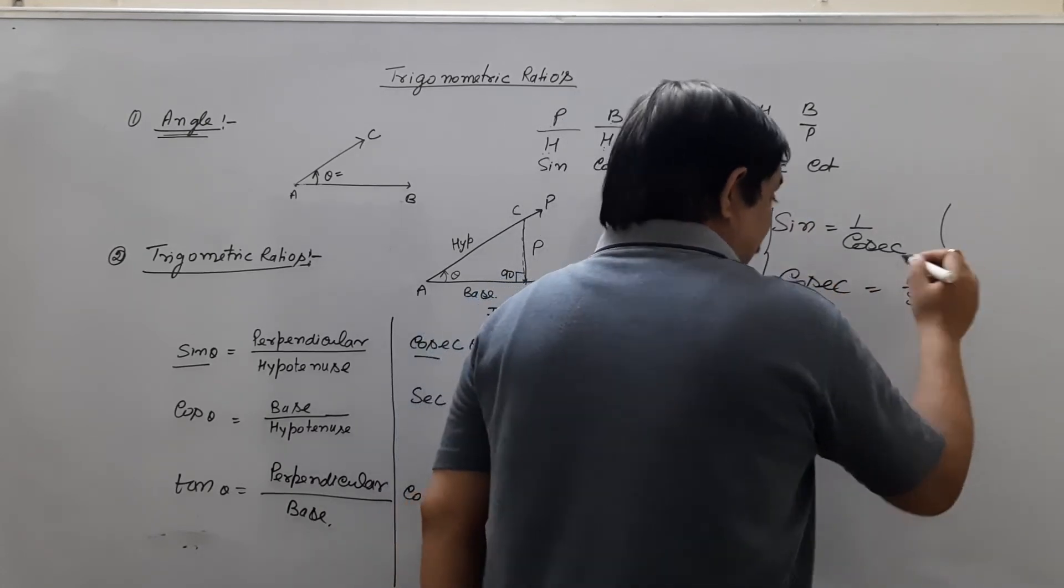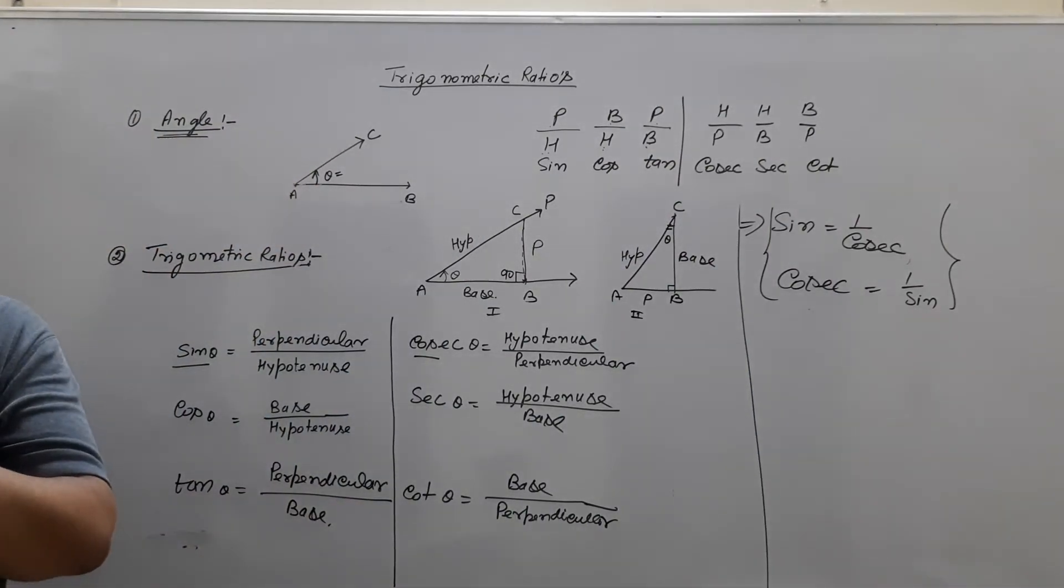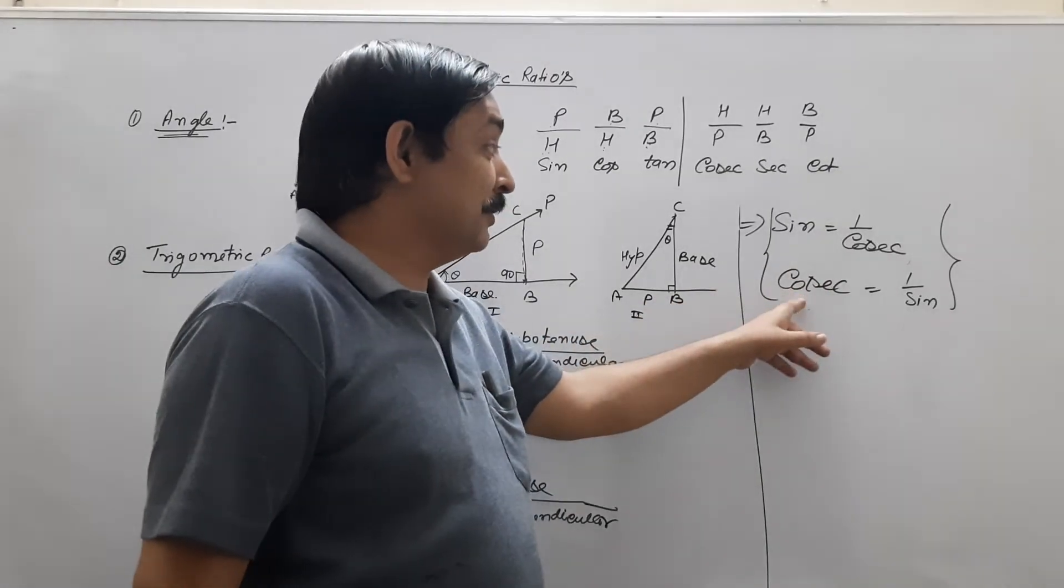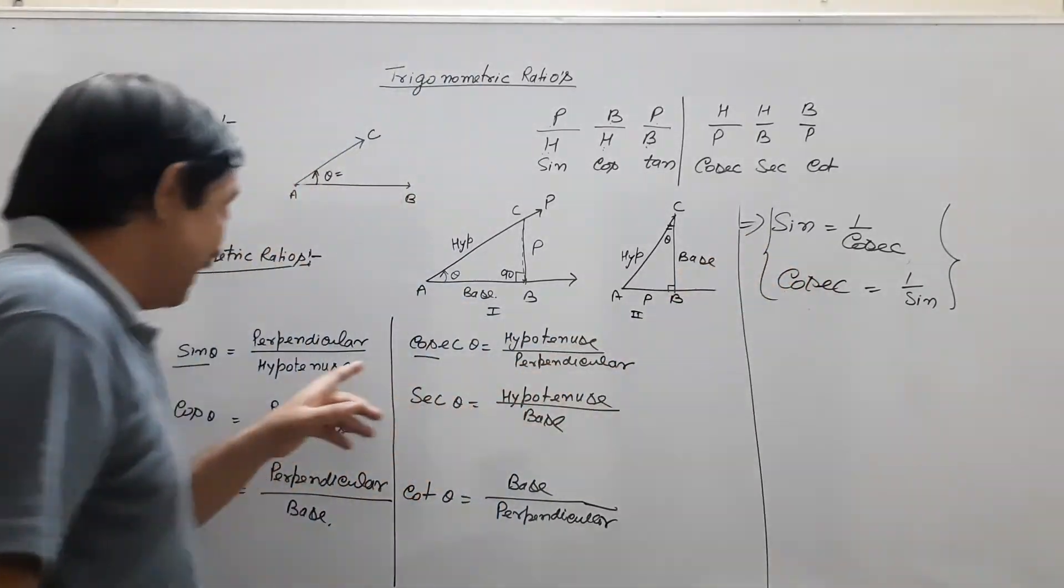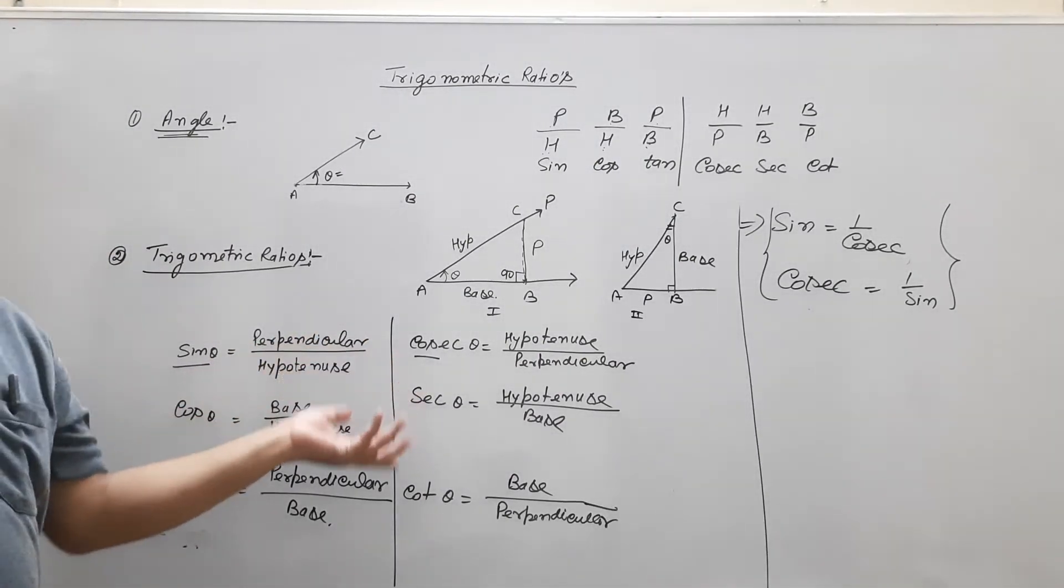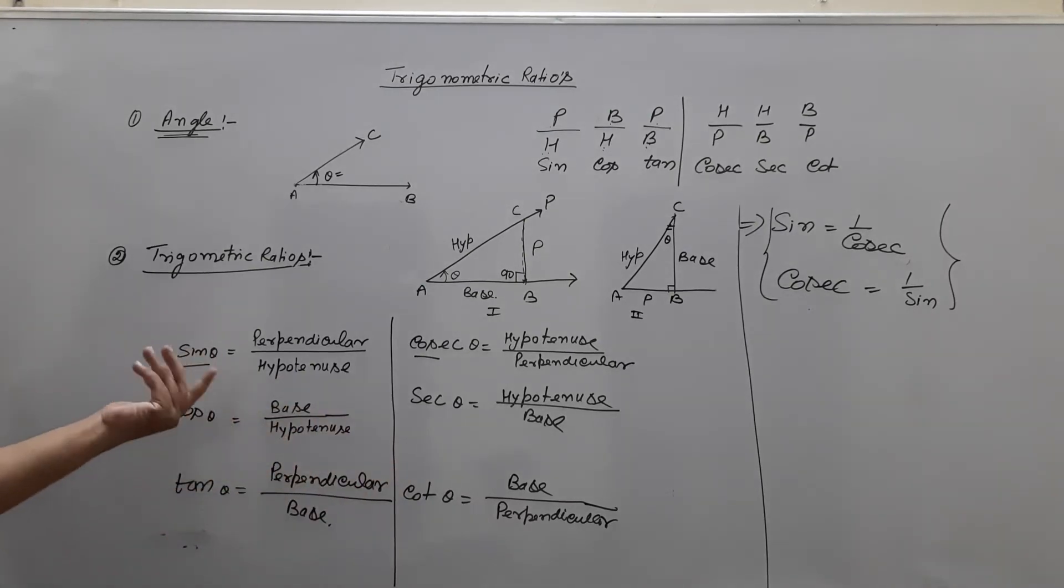And who are suffering phobia, they said two identities. But we have only one relation. Sin is the reciprocal of cosec. Cosec is the reciprocal of sin. Simple.